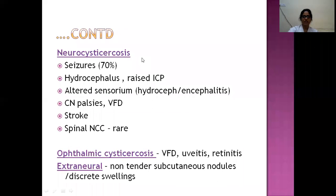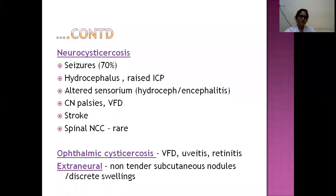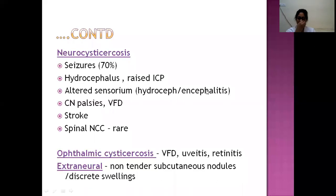In neurocysticercosis, 70% of patients present with generalized tonic-clonic seizures. Patients can also have features of hydrocephalus — headache, blurring of vision, and vomiting due to raised intracranial tension. Three causes of hydrocephalus are: immune-response-induced cerebral edema; arachnoiditis from extra-parenchymal disease causing CSF flow blockade; and cysticerci within the ventricles causing obstruction.